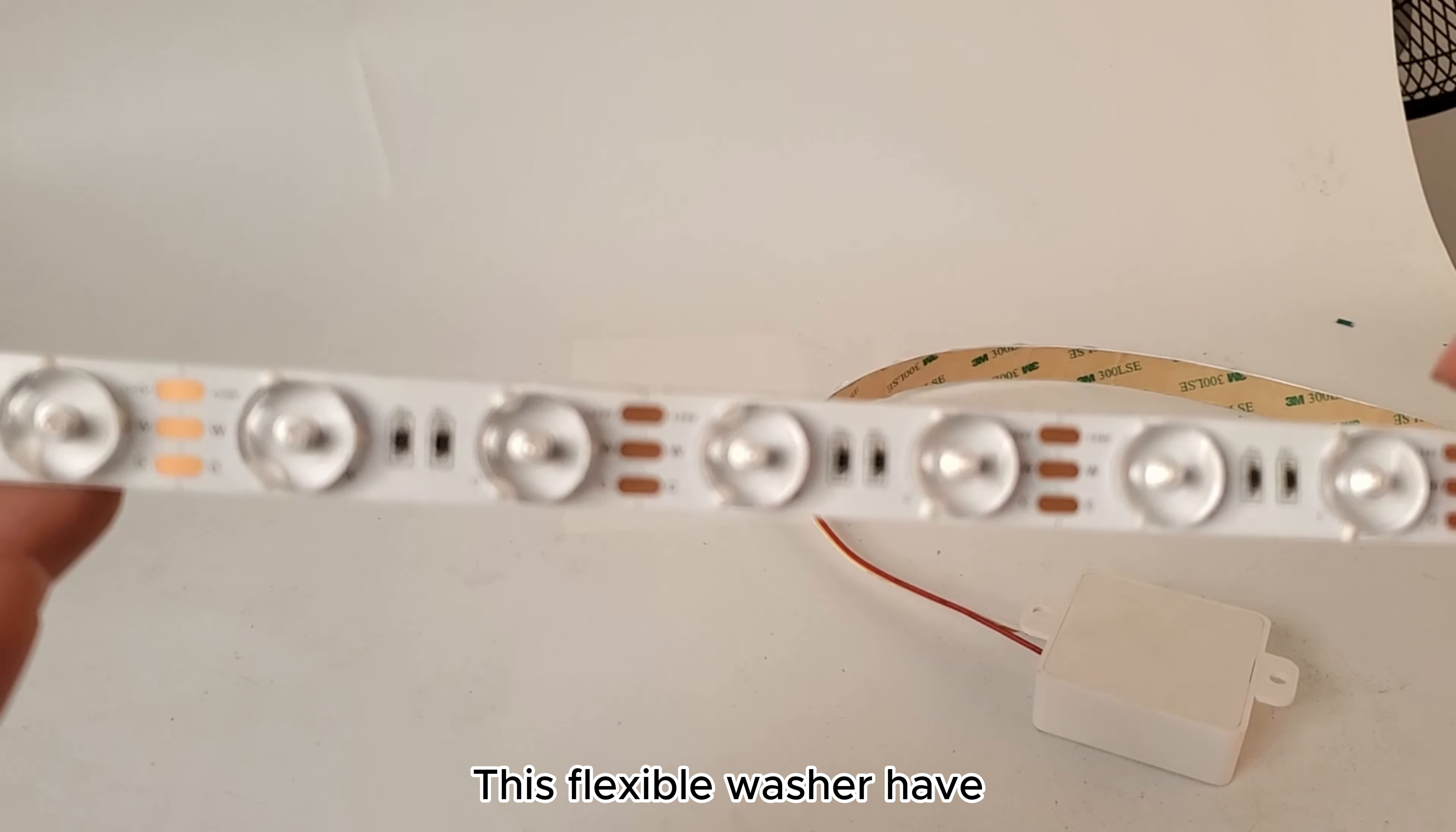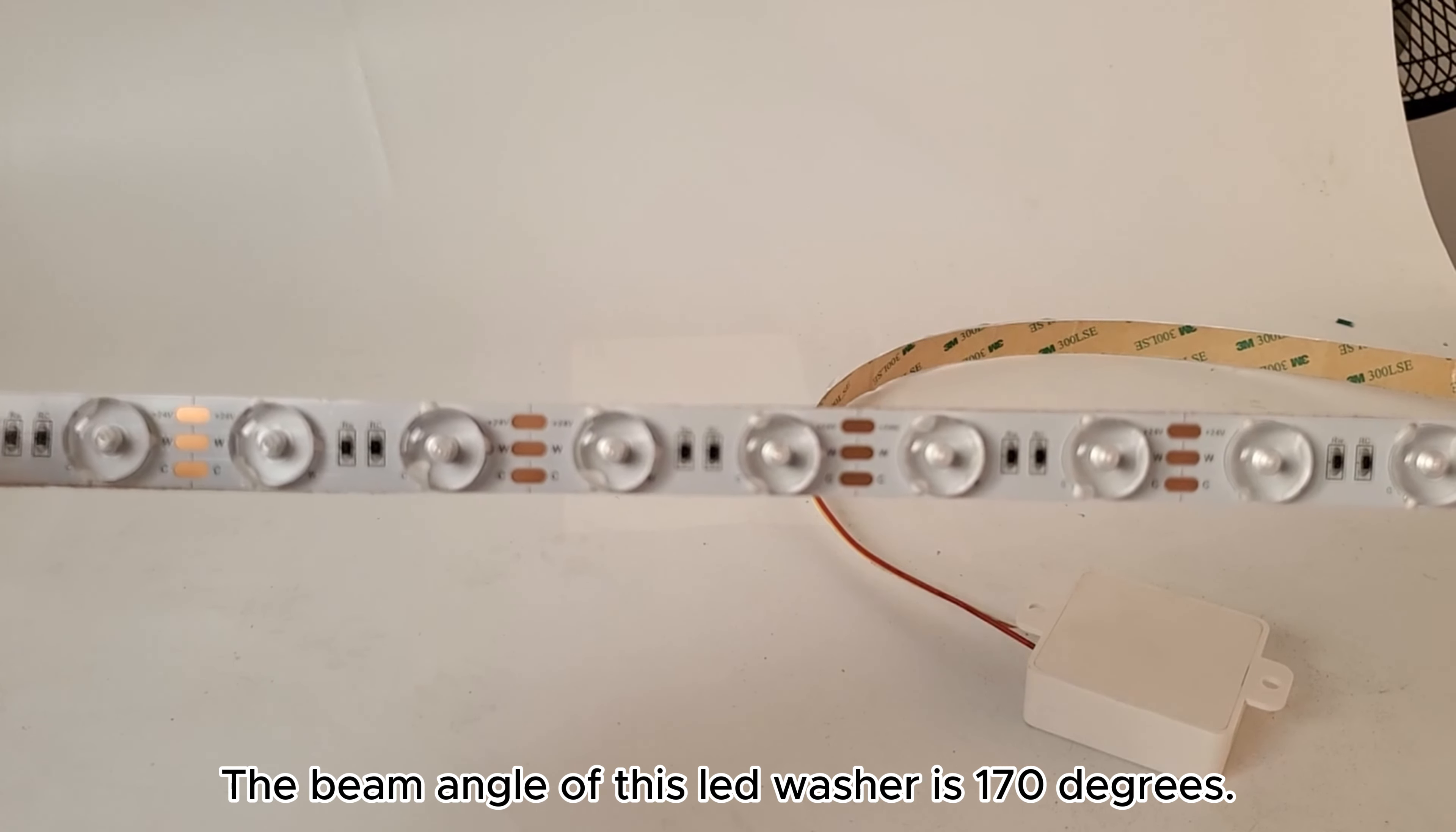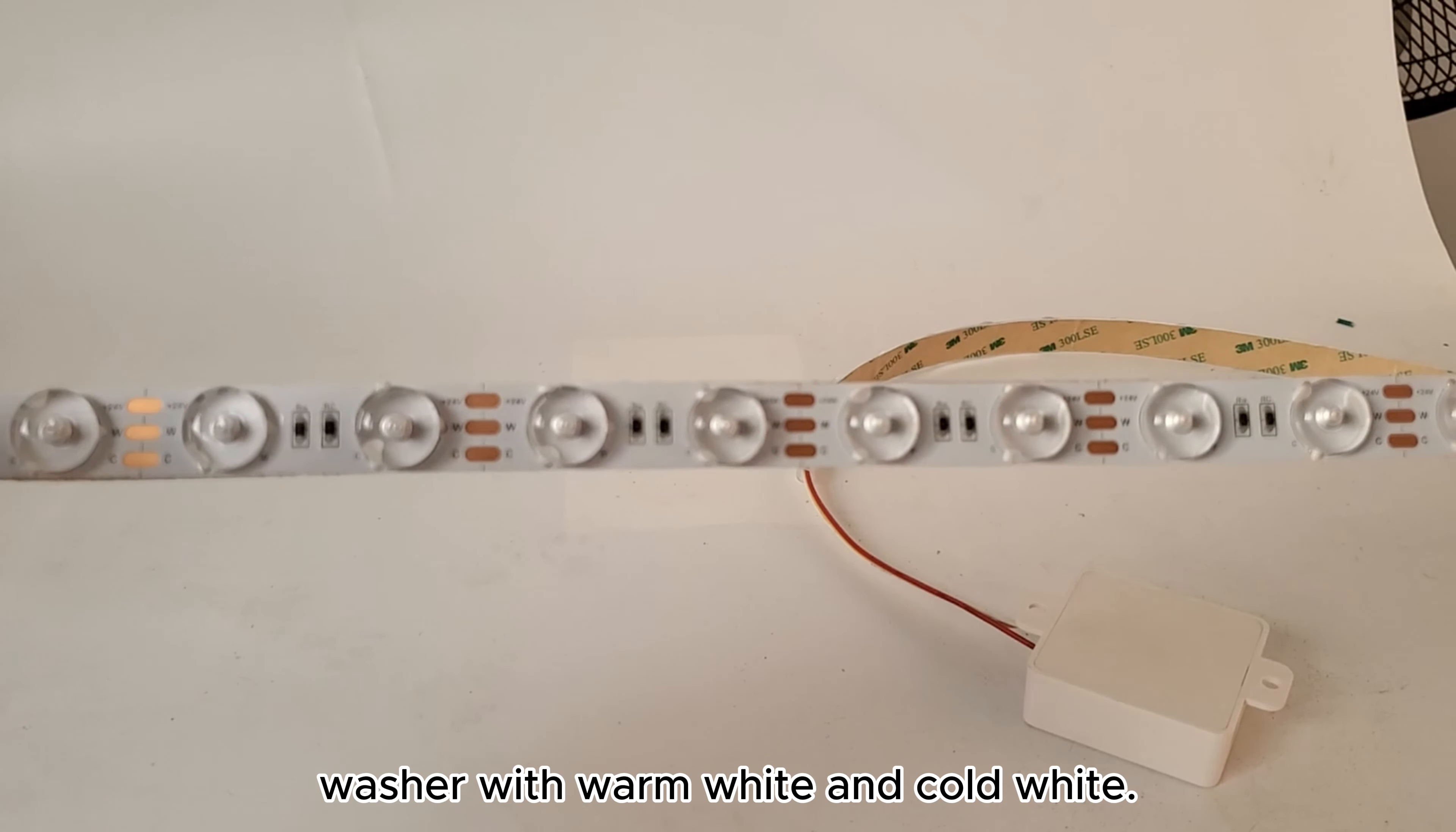This flex wall washer has 30 by 30 LED lens. The beam angle of this LED washer is 170 degrees. It has a really good beam angle. And this is a dual color LED wall washer with warm white and cold white.